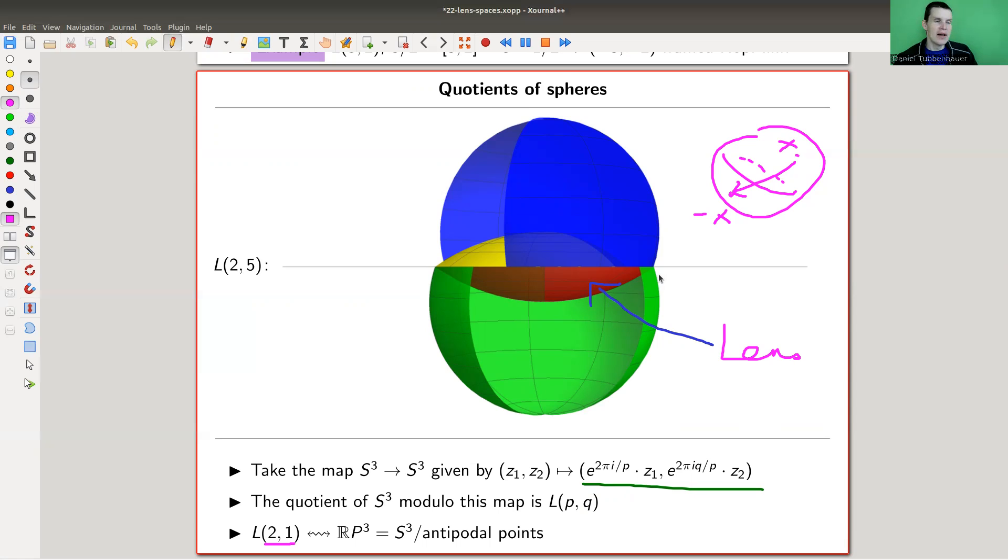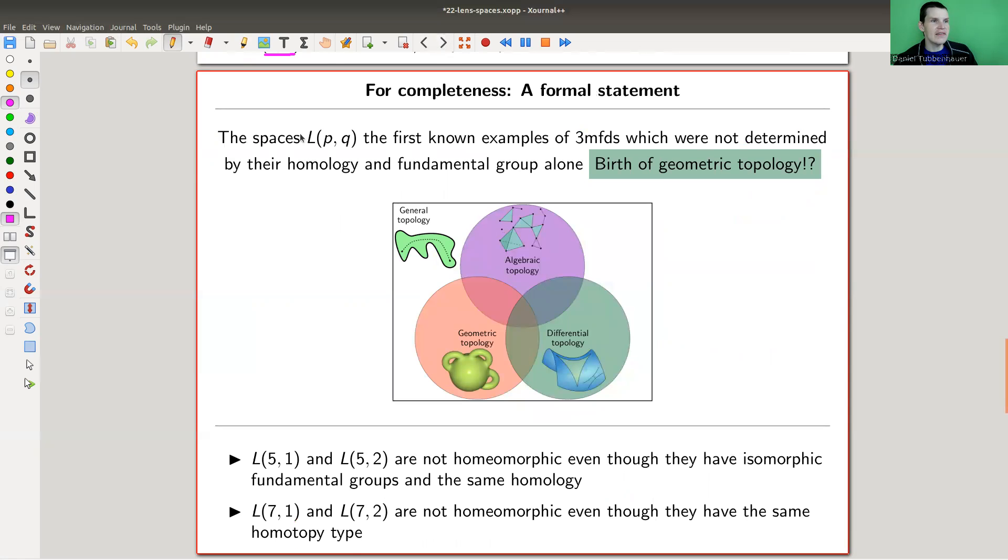That actually fired the field of geometric topology because algebraic topology fails for those lens spaces. The lens spaces are the first known examples of three manifolds that were not determined by the homology and the fundamental group alone. L(5,1) and L(5,2) are not homeomorphic, but they have isomorphic fundamental groups and the same homology. Algebraic topology tells you they are the same, but they're not.